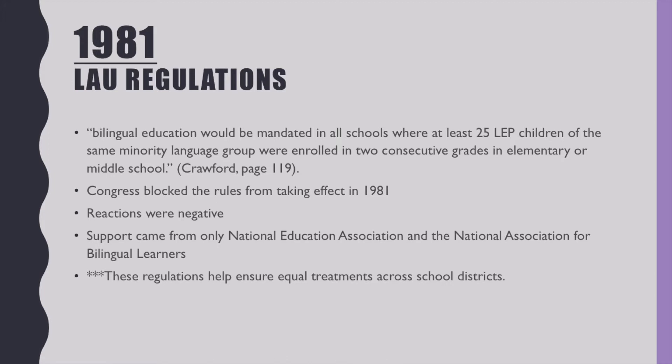The Lau regulations were established and put into practice in 1981. Bilingual education would be mandated in all schools, which was important because it regulated bilingual education programs in more schools. With the passing of these regulations, more schools became more accepting of bilingual education. A lot of the reactions were negative, but support came from the National Education Association and the National Association for Bilingual Learners. This further proved the long fight for bilingual education.